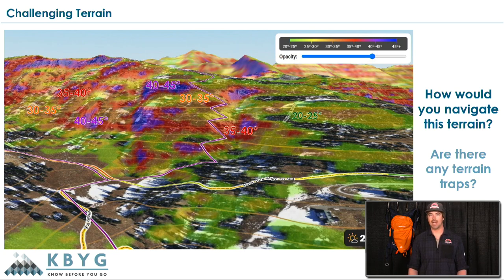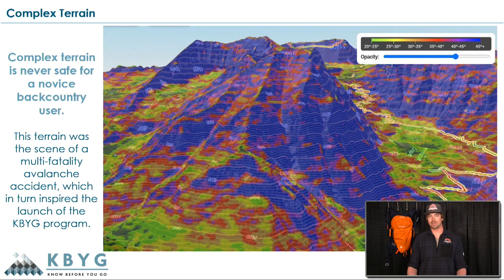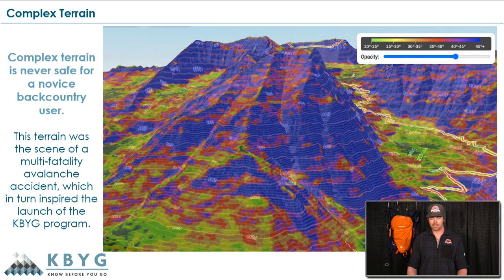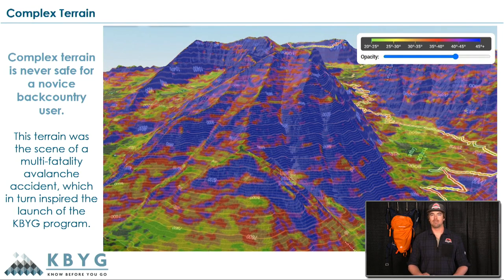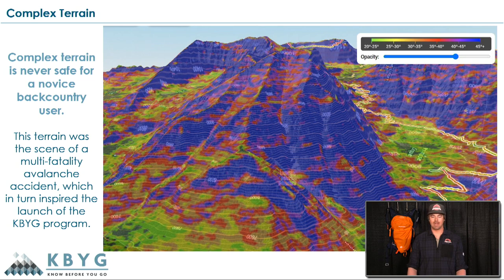Here we have an example of complex terrain. Just looking at the slope angle shading map, it's in-your-face avalanche terrain — there's really no way to move through this safely with any kind of avalanche hazard. Complex terrain should not be entered by beginner or even intermediate backcountry recreationalists. It takes a ton of knowledge to navigate, and we really wait for the spring when avalanche danger lowers to move through terrain like this.